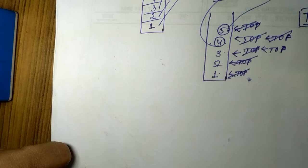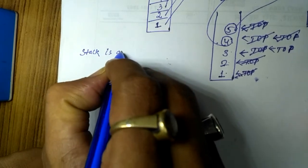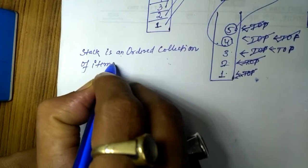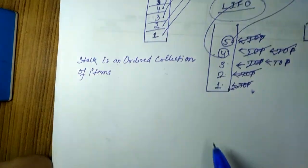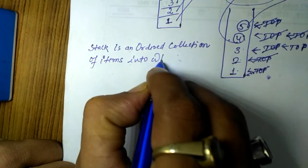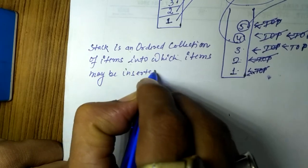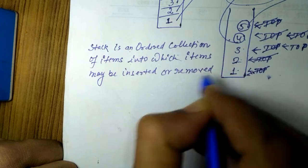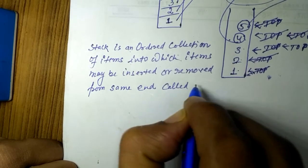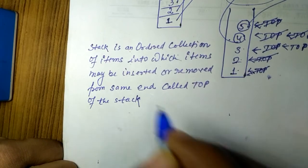Accordingly, we can define stacks. A stack is an ordered collection of items following last in first out order, in which items may be inserted or removed from the same end called the top of the stack. It's a simple definition: insertions and deletions take place at the same end, which is called the top of the stack.